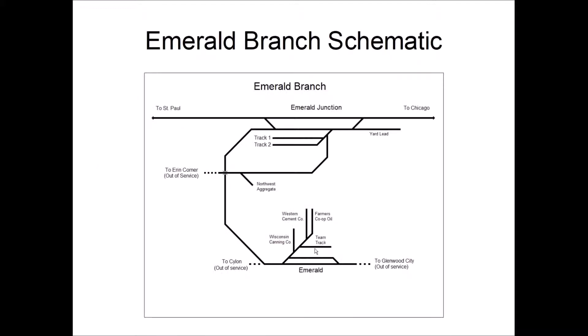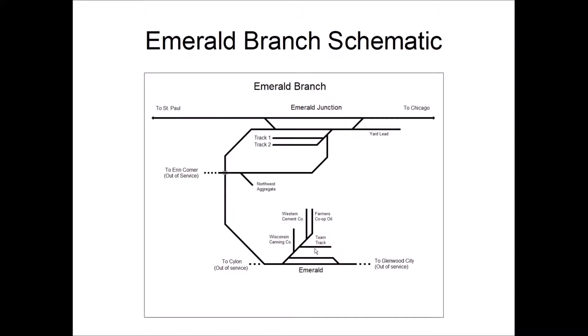Again, just a quick review. Here's our schematic of our branch line. But if we zoom out a little bit, it actually looks like this. So we have Chicago in the east, St. Paul in the west, Emerald Junction in the middle, and our branch line running down to Emerald.